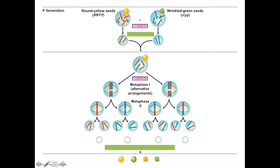On one chromosome pair, you have the information for shape — and on this parent, it's big R and big R. On a second, smaller chromosome, you have big Y and big Y. So you have four chromosomes total: the Y information, the color information, on one chromosome, and the shape information on the other. On the other parent, all the chromosomes carry small letters. The color information is on one chromosome, and the shape information is on the other.